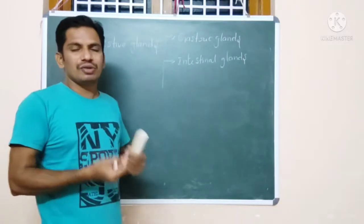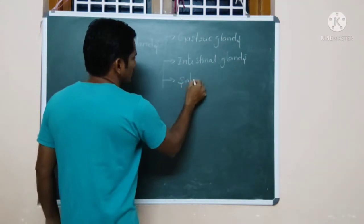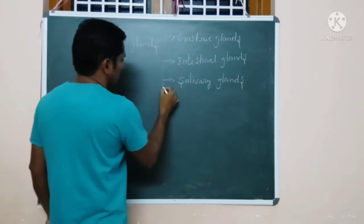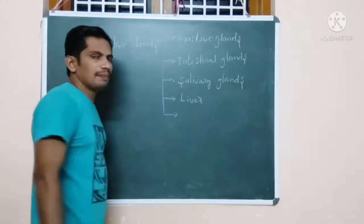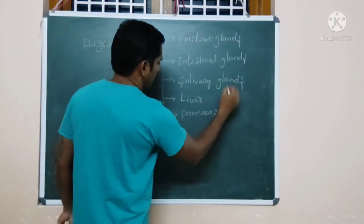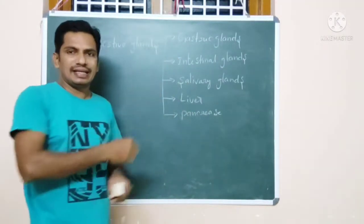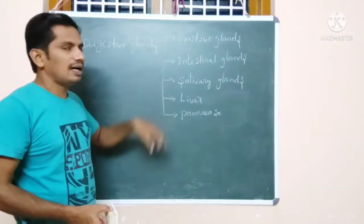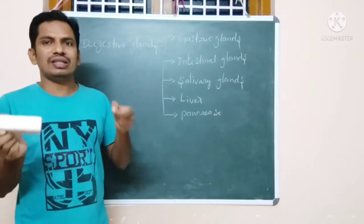The rest of them we call the associated glands, which are the salivary glands, liver, and the last one is the pancreas. These two — gastric and intestinal — are present in the wall of the alimentary canal at different locations, and these three are the associated glands. It means they open into the alimentary canal through tubes.